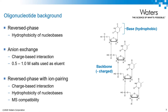Based on the oligo structure, hydrophobicity of the bases and the negatively charged phosphate backbone are going to lend themselves to three modes of LC that can be used for analysis. Although the nucleobases can contribute some degree of hydrophobicity, reverse phase is probably more commonly used to separate or purify DMT-on from DMT-off species that result from synthesis. Anion exchange is of course a charge-based technique and while useful it does not lend itself to MS. Ion pair reverse phase is by far the most common technique, especially when MS is required, and it's what we're going to focus on for today.